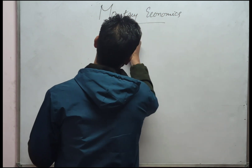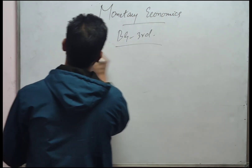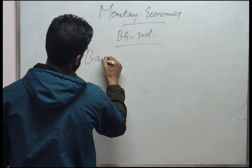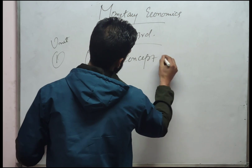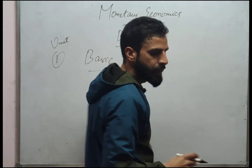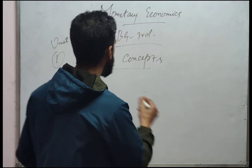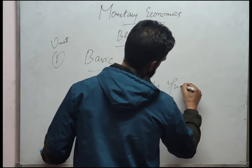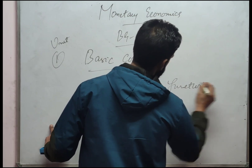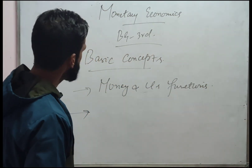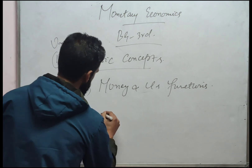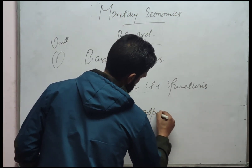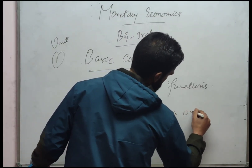We have Monetary Economics Major as the subject for BG third semester. We have four units. Unit one is Basic Concepts. The first question is: what is money and its functions — the definition of money and its functions. The second question covers different approaches to the definition of money.